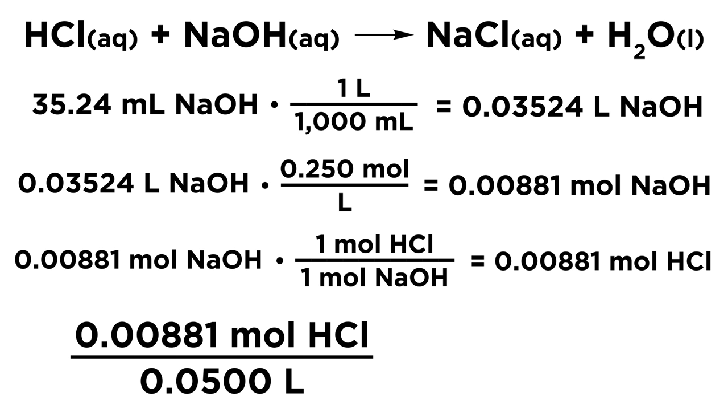Because we know we had 50.0 milliliters of acid. We knew the volume, we just didn't know the concentration. So that many moles over that many liters gives us 0.176 moles per liter, or 0.176 molar HCl, which was the concentration of our unknown HCl solution.